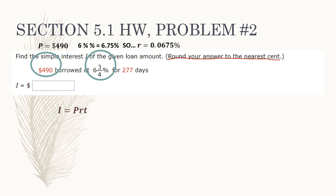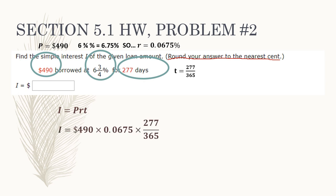Lastly, we need to identify T, the term of the loan, which must be in years. Since they give us the term in days, this is only a fraction of a year. To convert to years: T equals 277 divided by 365, since there are 365 days in a year. Don't worry about simplifying these fractions. Plugging everything in: I equals $490 times 0.0675 times (277 over 365). That gives you $25.10.